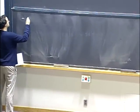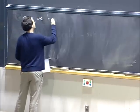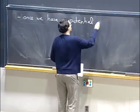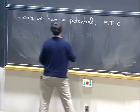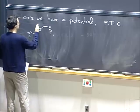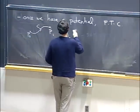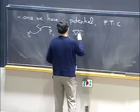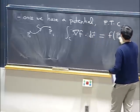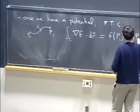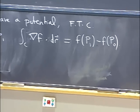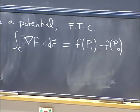Once we have the potential, the fundamental theorem of calculus tells us that the line integral for work done by ∇f along a curve from P₀ to P₁ equals f(P₁) − f(P₀), the change in value of the potential. In particular, this doesn't depend on the path taken — that's why we have path independence.